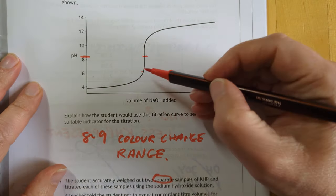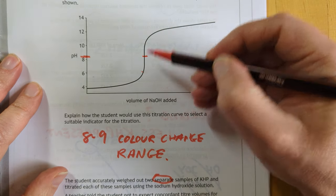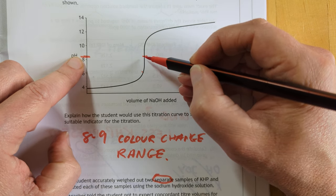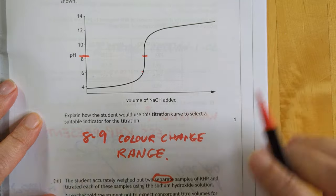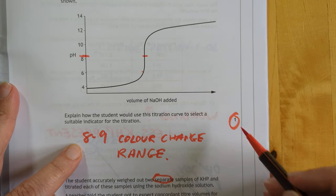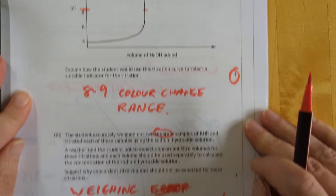This one here, this is the point at which the equivalence point is halfway on the vertical scale, which in our case is just over 8. So you want an indicator that changes somewhere between 8 and 9 roughly. I don't know how on earth you're going to put that into a sentence. I'll leave that up to you.